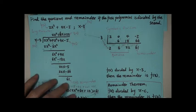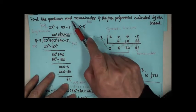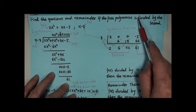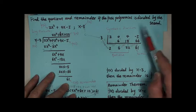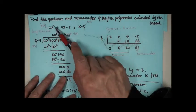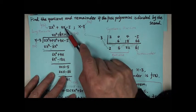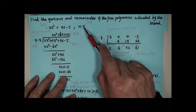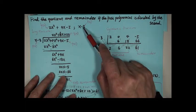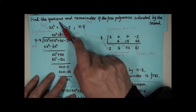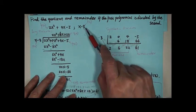This example says to find the quotient and remainder if the first polynomial is divided by the second. The first polynomial is 2x cubed plus 4x minus 5. The second one is x minus 3. We want to find out the quotient and remainder if the first one is divided by the second one.